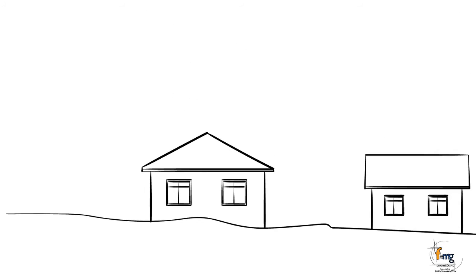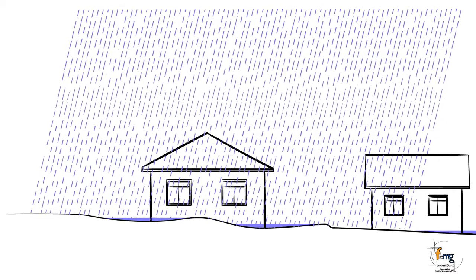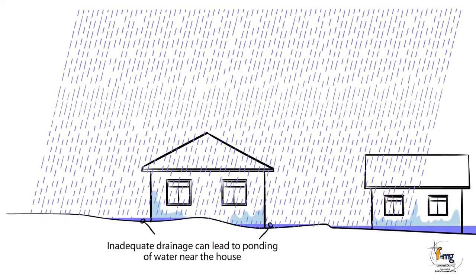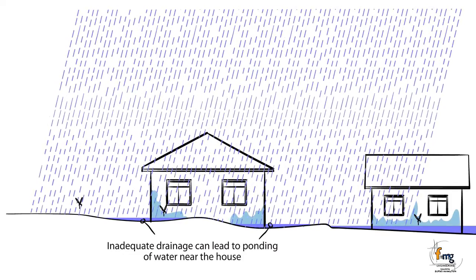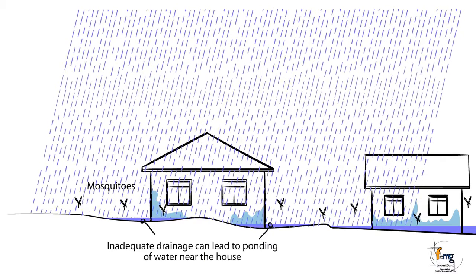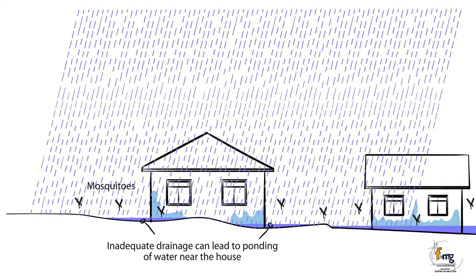Inadequate drainage can lead to damage to your home by flooding and/or pooling of water near the house. Pooling water can lead to soil heave, dampness of building, corrosion and mosquitoes. See another FMG video which explains soil reactivity.